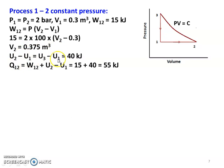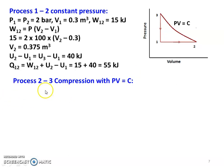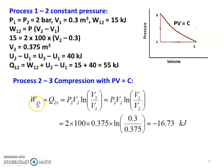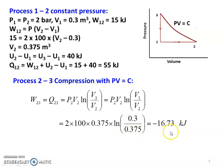Since U2 equal to U3, U2 minus U1 equal to U3 minus U1 equal to 40 kilojoules. Heat transfer for the first process Q12 equals W12 plus (U2 minus U1) equals 15 plus 40 equals 55 kilojoules. For process 2 to 3, compression with PV equal to constant: heat transfer equals P2 V2 logarithm of (V1 by V2) equals 2 into 100 into 0.375 into logarithm of (0.3 divided by 0.375) equals minus 16.73 kilojoules.